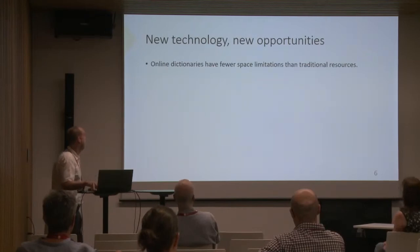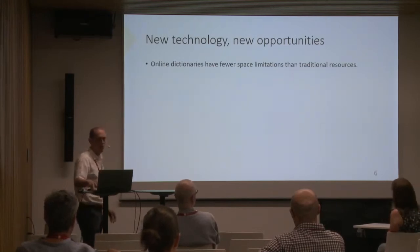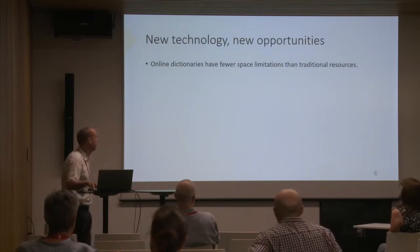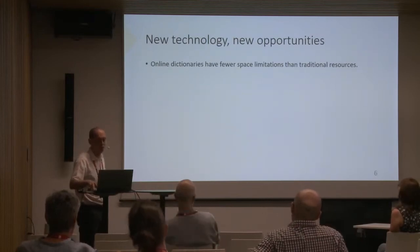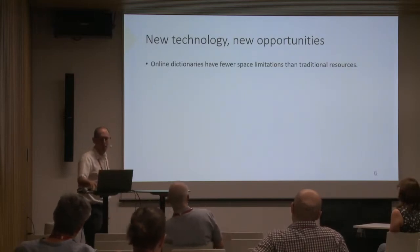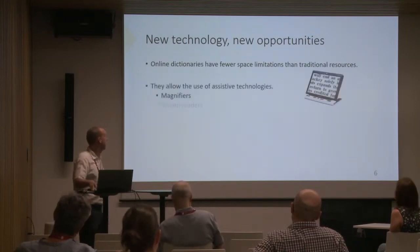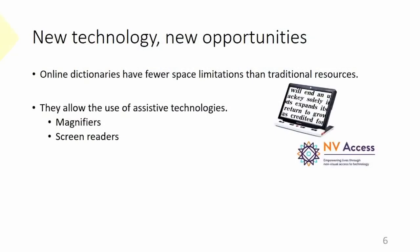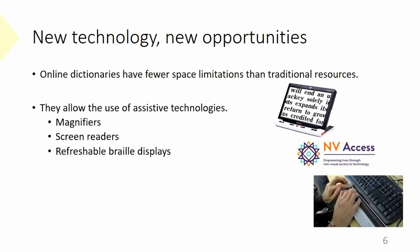Happily, with new technology, we have new opportunities. Online dictionaries have fewer space limitations than their traditional counterparts. And they allow the use of assistive technology — things like magnifiers, screen readers, which is software that displays or reads the text on screen to sighted users using a computer-synthesized voice, and things like refreshable braille displays, which are little devices that represent the characters on screen as braille characters.